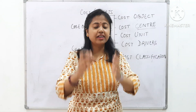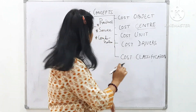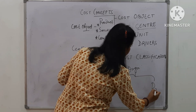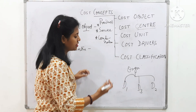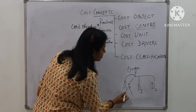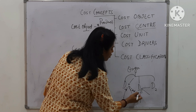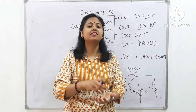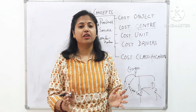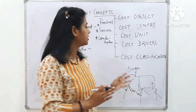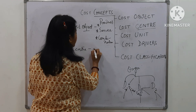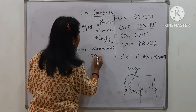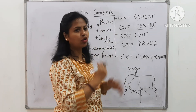A cost center is that segment, division, or department to which cost is accumulated. Suppose an organization has different departments or sections. We accumulate cost in each department — there can be some cost here, some cost there. That center in which all costs are accumulated is known as the cost center. It is the center responsible for controlling and classifying the costs of the organization.